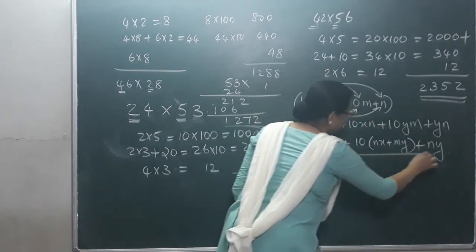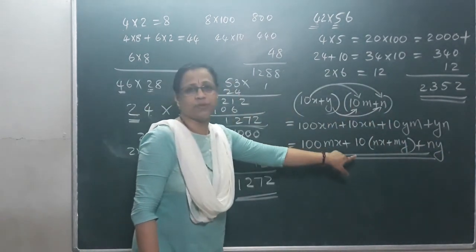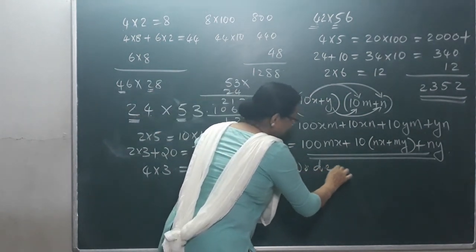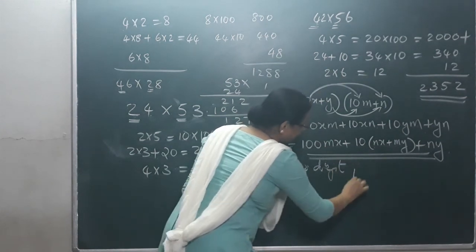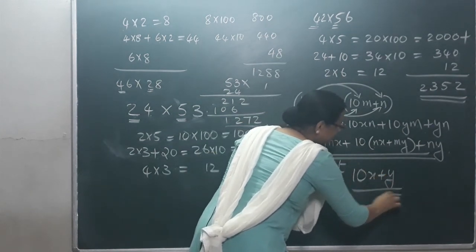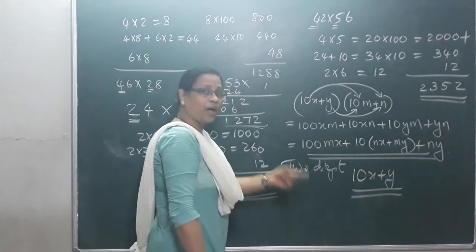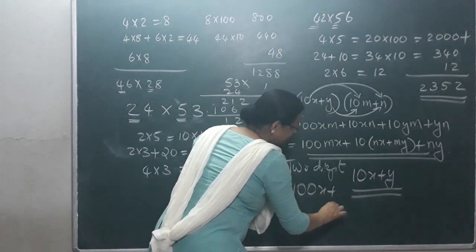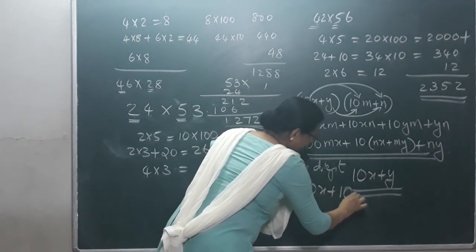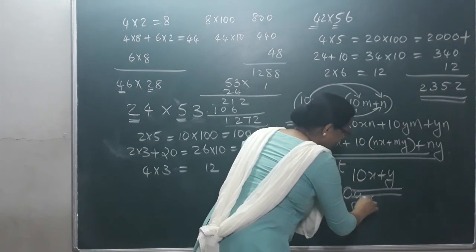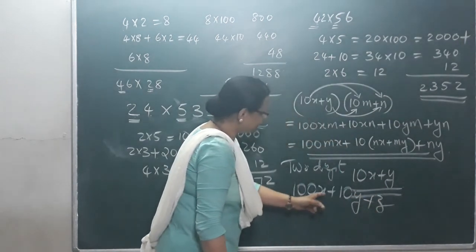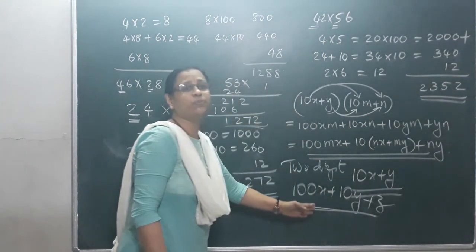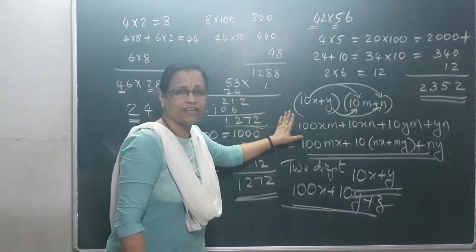How do we express this algebraically? A two-digit number is expressed as 10x plus y. That's how we express a two-digit number. And how do we express a three-digit number? We write 100x plus 10y plus z — that is our 3-digit number. That's what we've covered in this video.